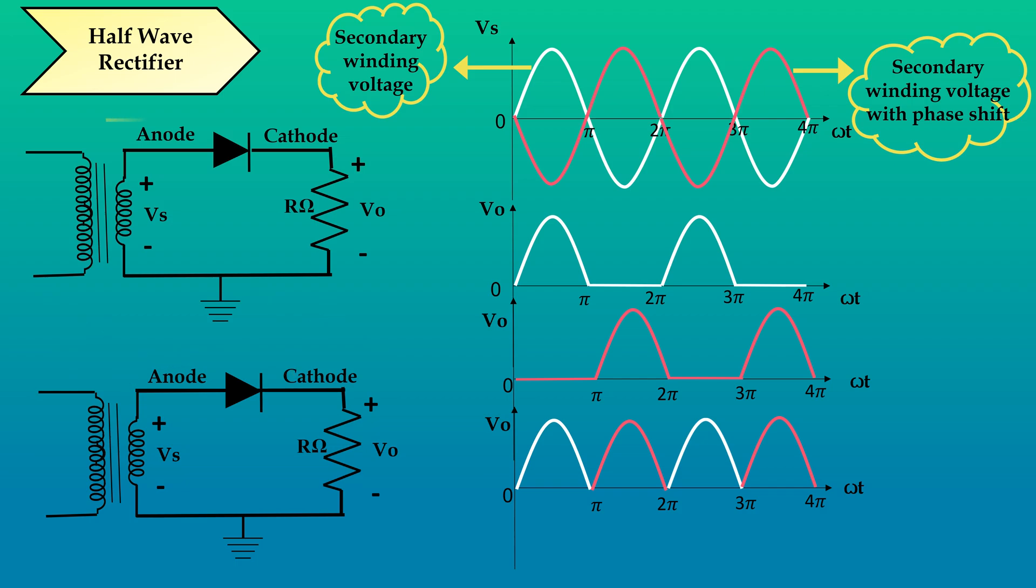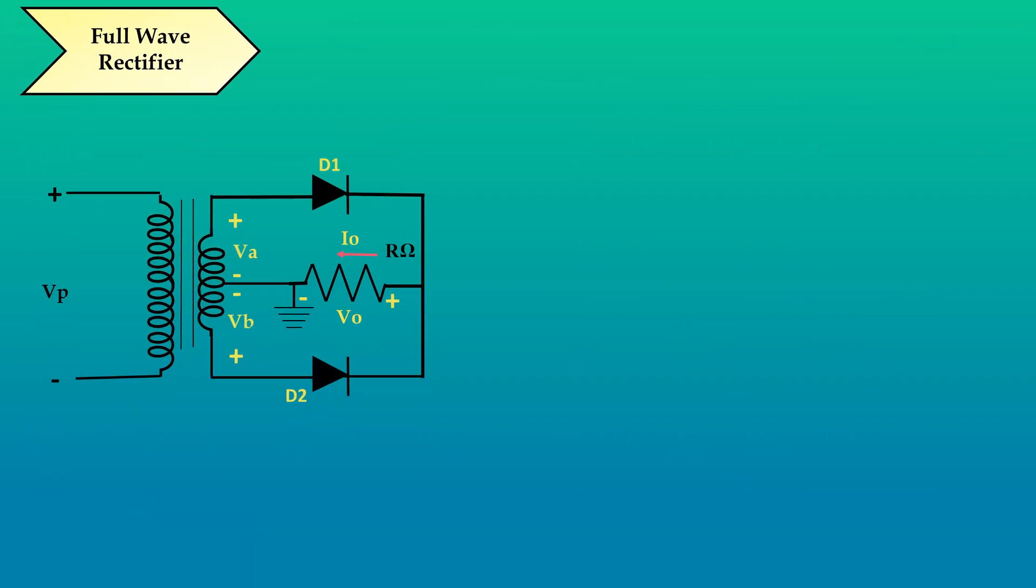For that, instead of using two transformers, we can use center tap transformer which will also satisfy our condition that the input of the second circuit should have a 180 degree phase shift. Now, the full wave rectifier circuit will be like this.